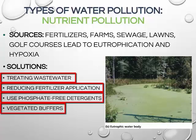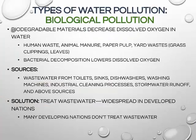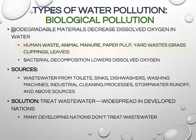The vegetation in the vegetative buffer filters nutrients and runoff before it reaches the water body. Another type of water pollution is biological pollution, caused by human and animal waste, paper pulp, and yard waste. Wastewater from toilets, sinks, dishwashers, washing machines, and industrial processes is also a source of biological pollution.